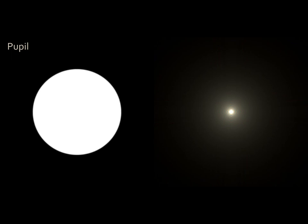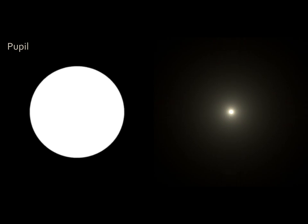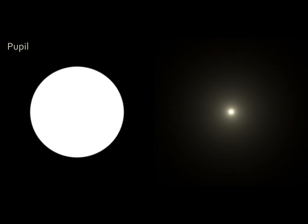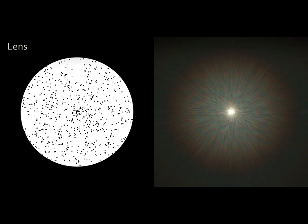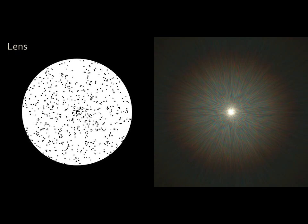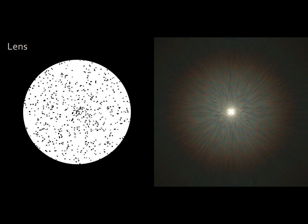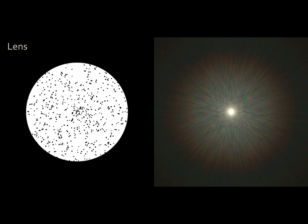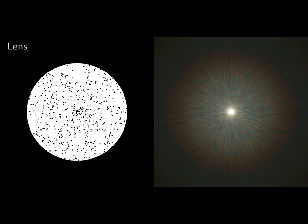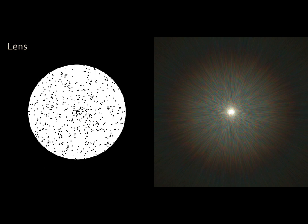First, the human pupil varies over time — the so-called pupillary hippus — causing the glare to rotate. Next, inside the crystalline lens, small particles scatter light. The movement of these particles is responsible for the pulsating effect and is caused by lens accommodations and lens micro-fluctuations.